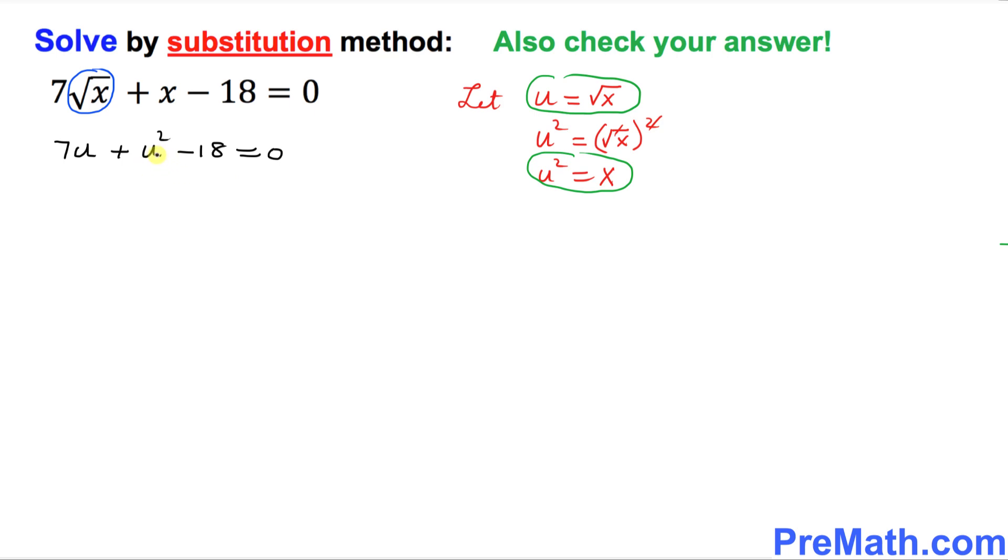This looks much like a quadratic equation. Let's put it in a descending order. So I'm going to put in a standard form. So let's put u square first. I'm going to put u square plus 7u minus 18 equal to 0.